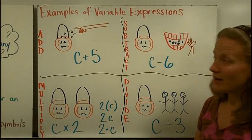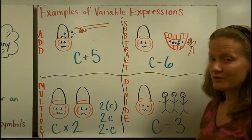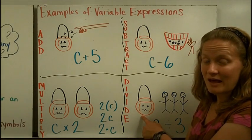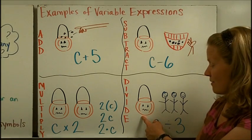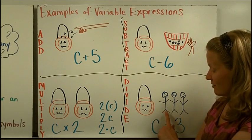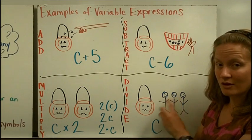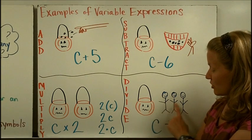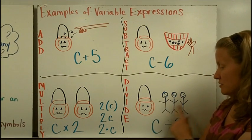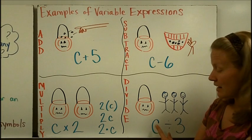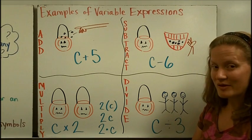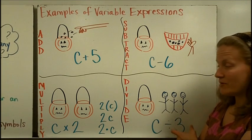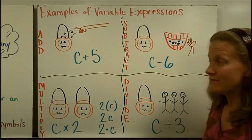And finally, a variable expression with division. Let's say you had your bucket with C pieces of candy, an unknown amount, and you wanted to divide that evenly between you and two friends. So you're dividing it evenly among three people. Then you could say that each person is going to get C divided by three pieces of candy. So the amount you started with divided into three equal pieces, this is how much each person would receive.